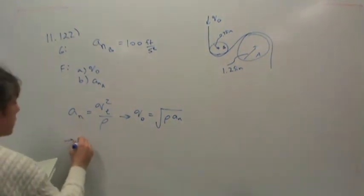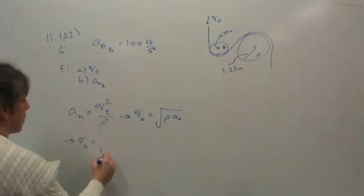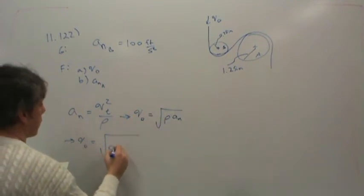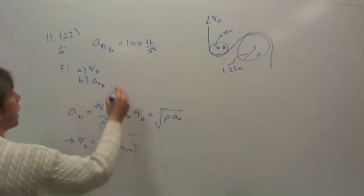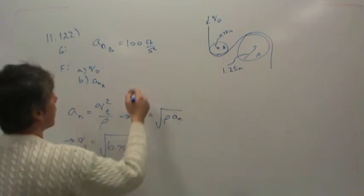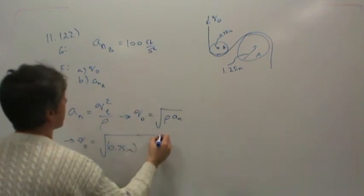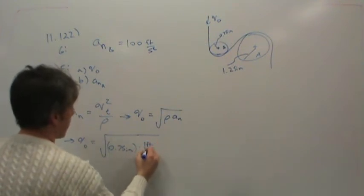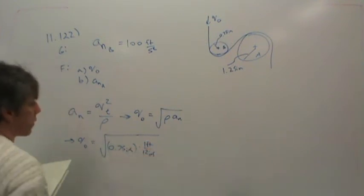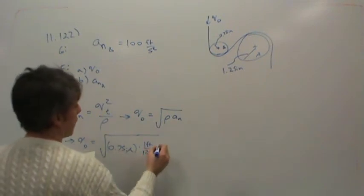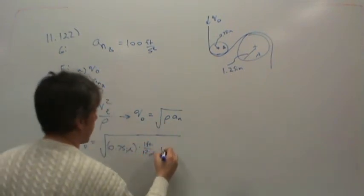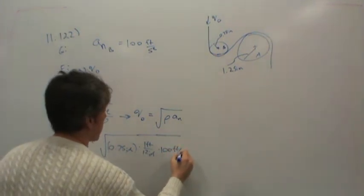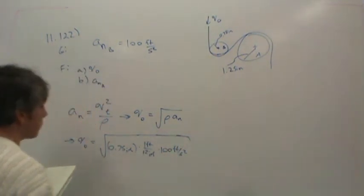So what that means then is V-naught is square root of three-quarters of an inch multiplied by, well, of course, they would give it to us in feet per second, so let's see. Let's just multiply by one foot per 12 inches. That'll get rid of the inches. And then multiply by the normal acceleration on B, which is 100 feet per second squared. Okay, so please plug that in your calculators, and let's see what you get.